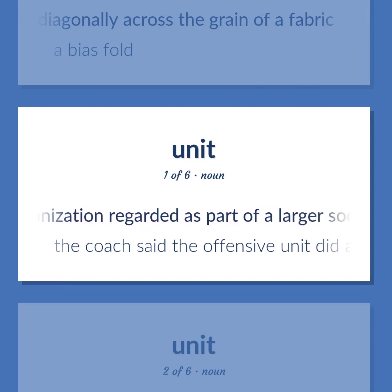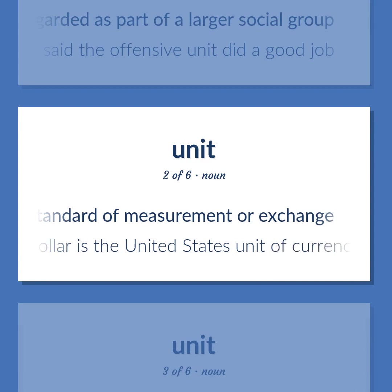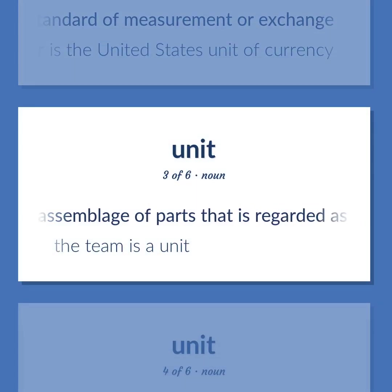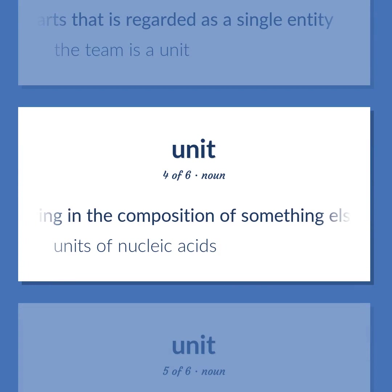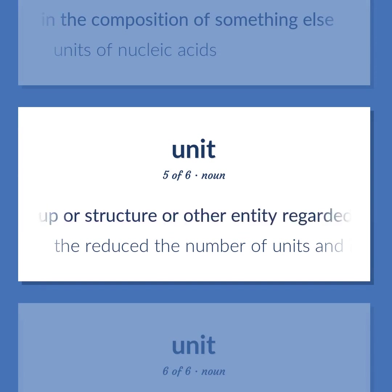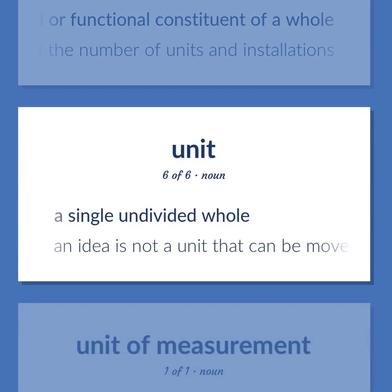Unit: An organization regarded as part of a larger social group. Example: The coach said the offensive unit did a good job. Any division of quantity accepted as a standard of measurement or exchange. Example: The dollar is the United States unit of currency. An assemblage of parts regarded as a single entity. Example: The team is a unit. A single undivided natural thing occurring in the composition of something else — units of nucleic acids. An individual or group or structure regarded as a structural or functional constituent of a whole. Example: They reduced the number of units and installations.